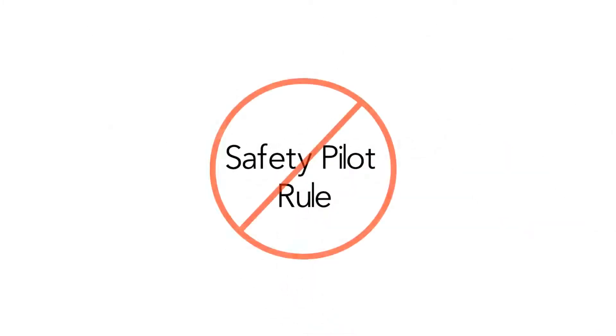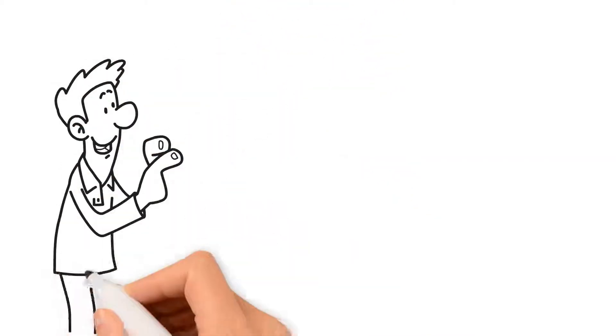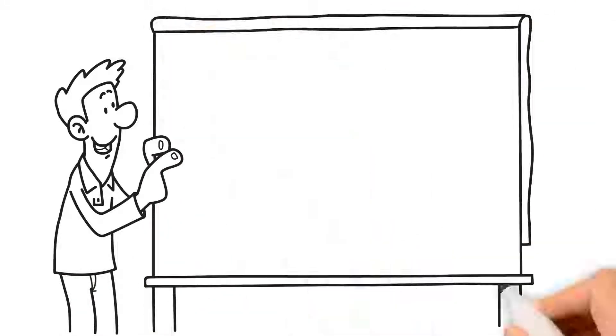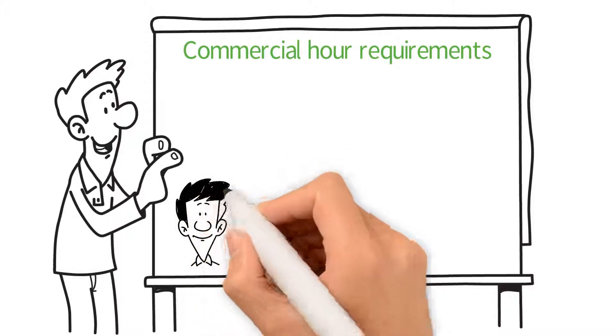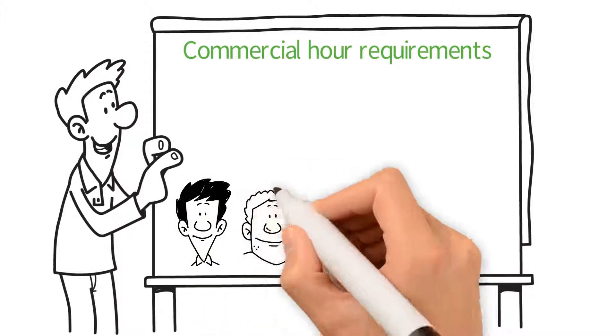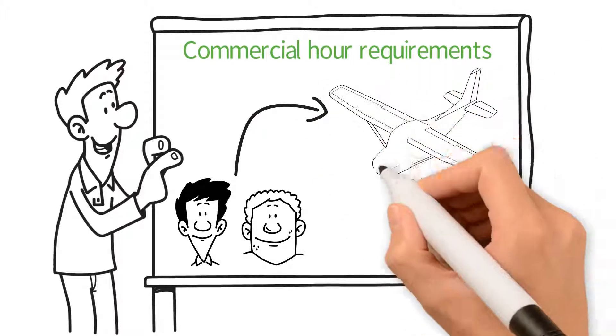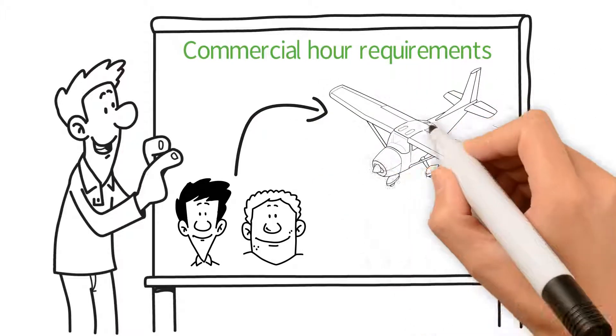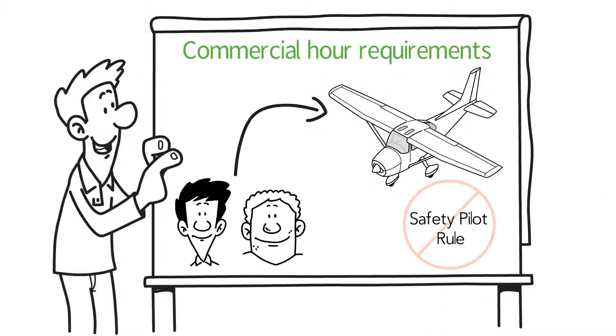Flight schools often reduce their quotes in the hour building portion. During the hour building, you are usually flying alone or with another student to build time towards your commercial hour requirements. It's important for you to know that you cannot use the safety pilot rule in order to save time. It is illegal. Read our FSOC for details on how this works. But the myth that you and another student can share your time building is not true. It is illegal.